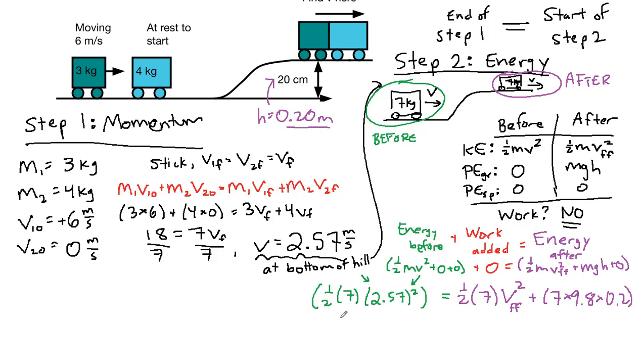Alright, so on the left, we have 23.1 joules. And on the right, this first term, 1 half times 7 is 3.5, the final final squared. This term here in our calculators, we get 13.7. So we can subtract 13.7 from both sides.